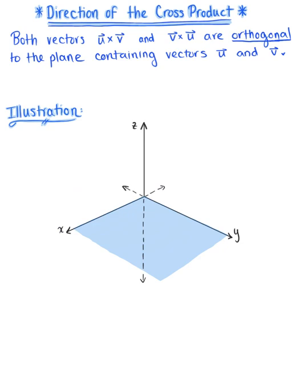Regarding the direction of the cross product, it's important to note that both u cross v and v cross u are orthogonal — meaning perpendicular, also called normal — to the plane containing vectors u and v. The vector v cross u is parallel to u cross v, just pointing in the opposite direction, so both vectors are perpendicular to vector u and vector v.